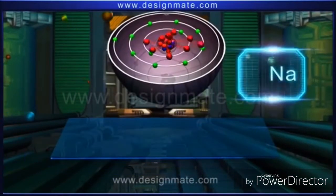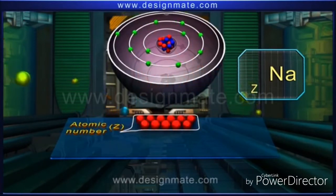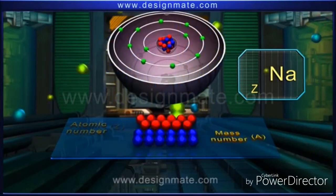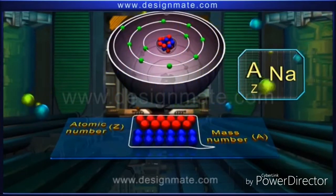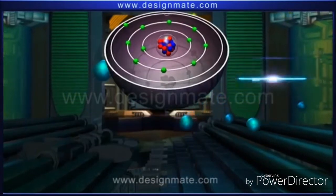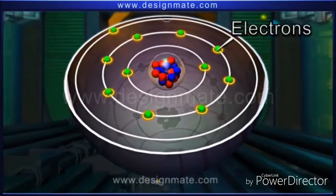Inside the nucleus there are positive charges called protons and neutral neutrons. The number of protons is called the atomic number, equal to the number of electrons. The sum of protons and neutrons is called the mass number. Around the nucleus, there are electrons revolving in orbits.